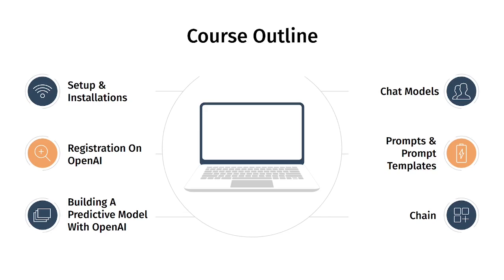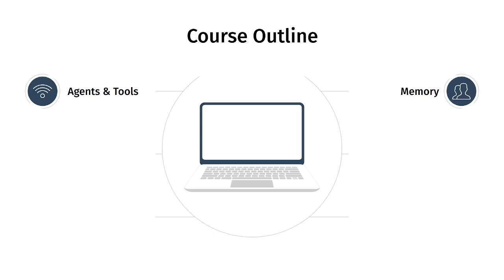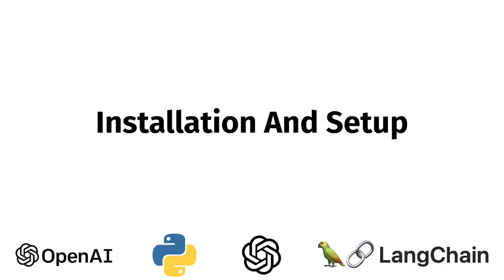Let's look at the course outline. First we'll set up our development environment, install Jupyter Notebook, register on OpenAI and get our API keys. Then we'll build a simple predictive model with OpenAI, look at chat models, prompts and prompt templates, chains in LangChain, agents and tools, and memory management in LangChain. This will move you from a complete beginner to intermediate.